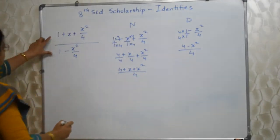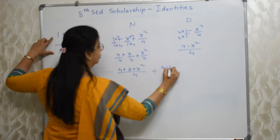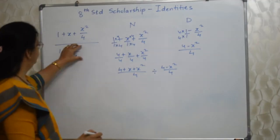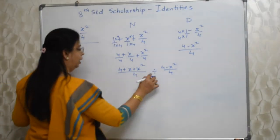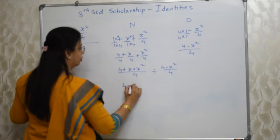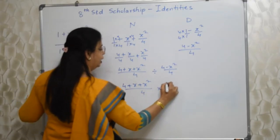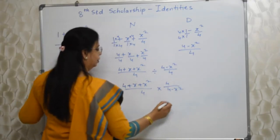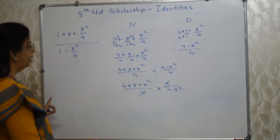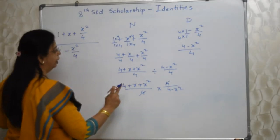Now let's write this as numerator divided by denominator. In division, we convert to multiplication by writing the reciprocal of the denominator. The 4s cancel. Here, if you don't know the identities you won't be able to proceed — believe me. So if you want marks you have to memorize those identities.